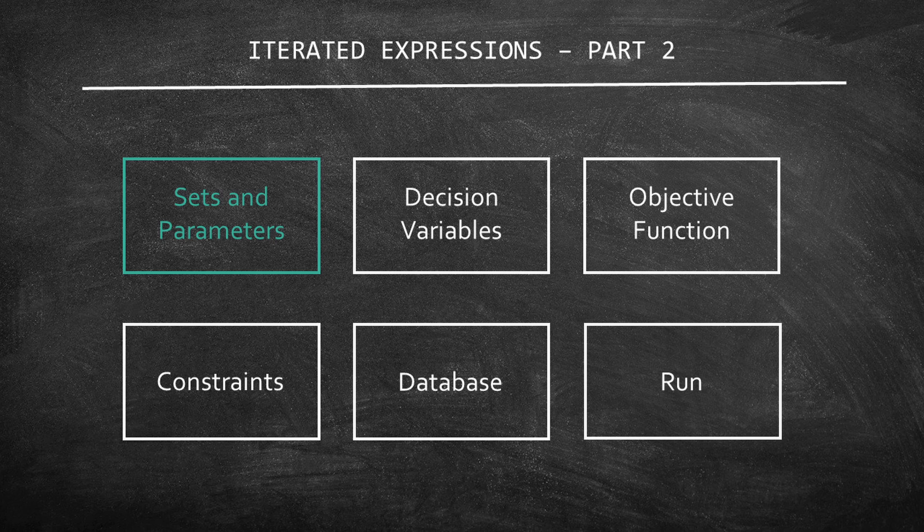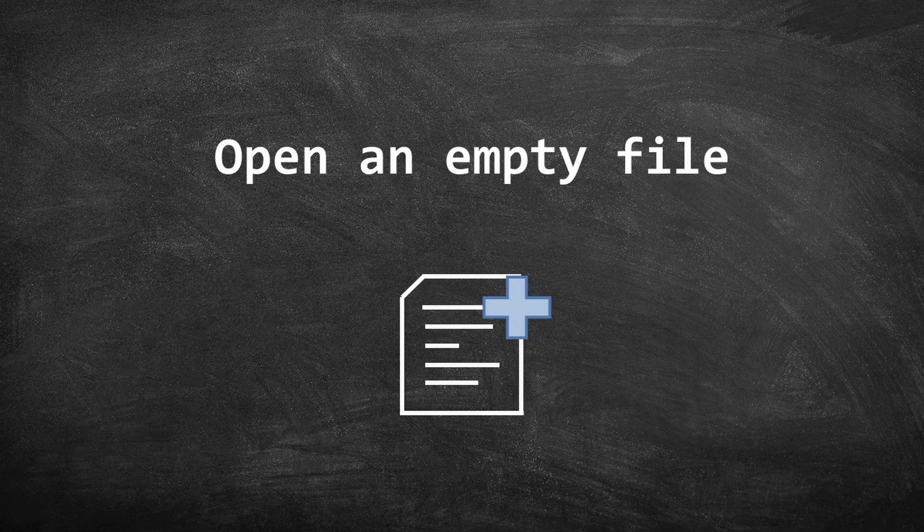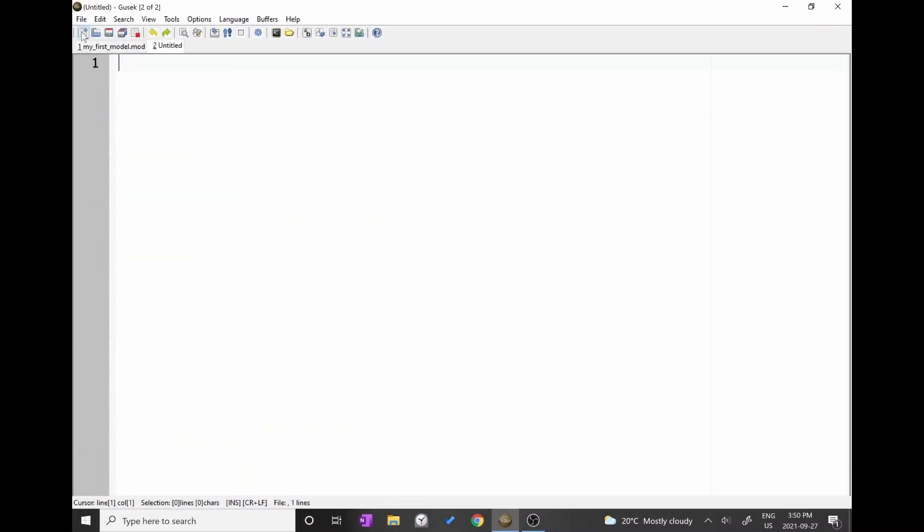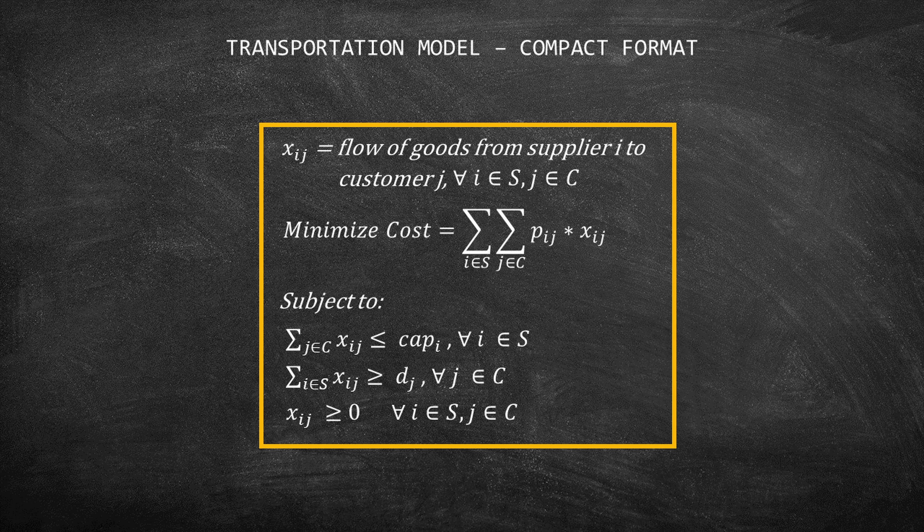Let's start our model by declaring our sets and parameters. First, I would like you to open an empty file on Gusek. To do so, you should click on the icon of a document with a plus. A new document should appear on your screen. In this video, we are going to code the compact form of the transportation problem that we studied previously. I will leave the link to the video on iterated expressions part 1 in the description below.